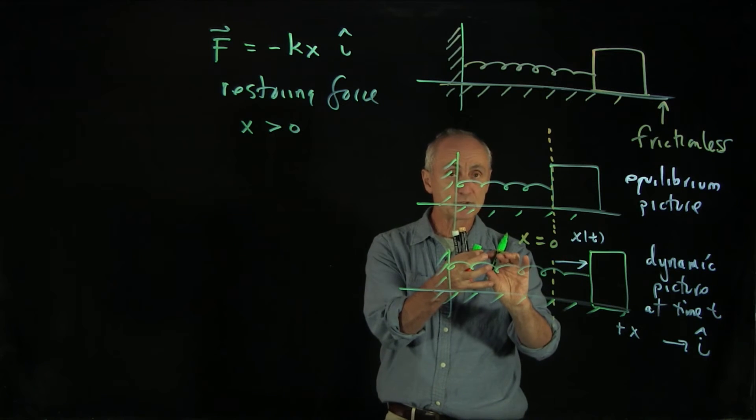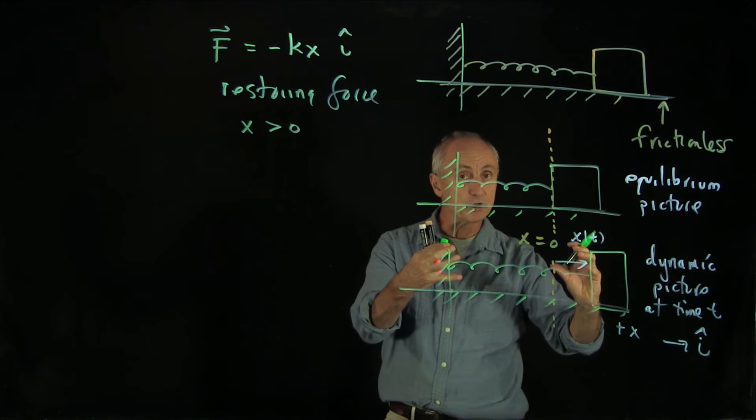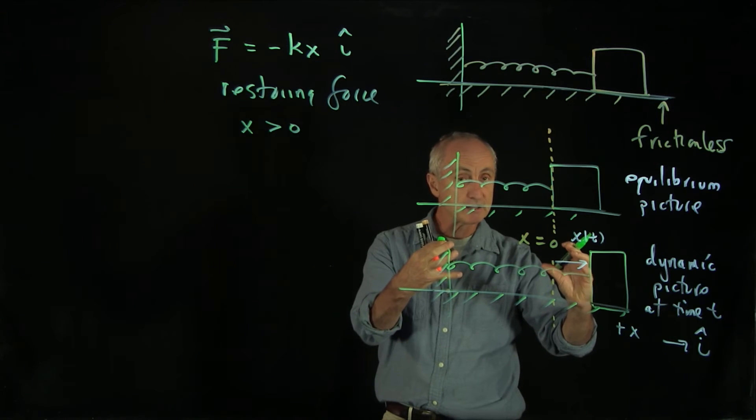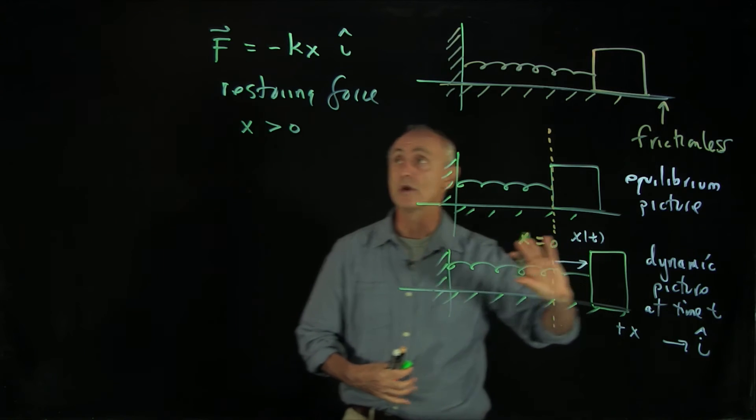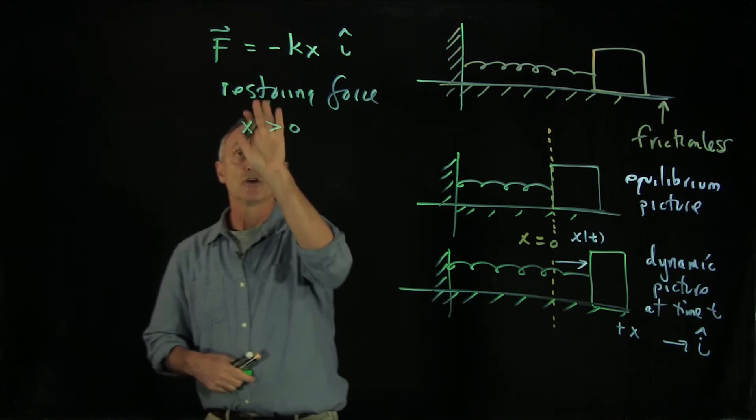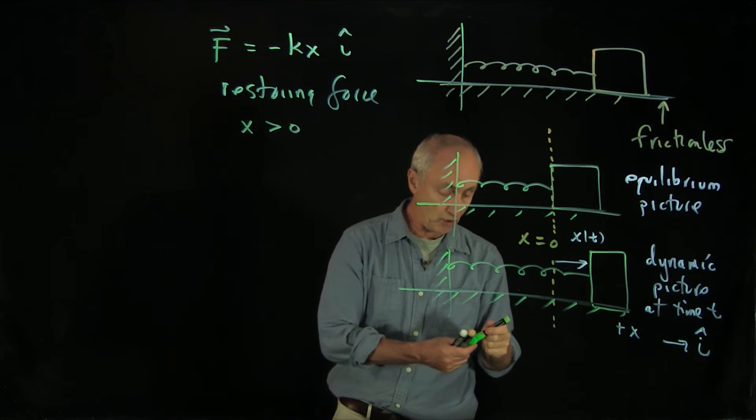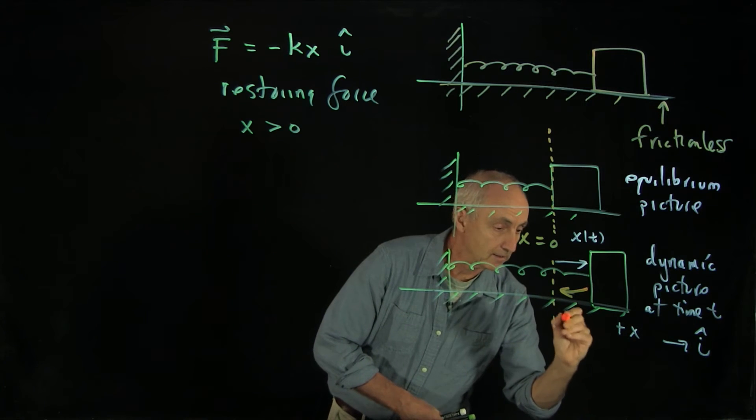The molecules in the spring that constitute the spring are being pulled apart, and there's a restoring force inside the spring. This is an atomic force in nature that's pulling the spring backwards, hence exerting a restoring force on the object. So this force is in the minus i hat direction, it's restoring in that direction.